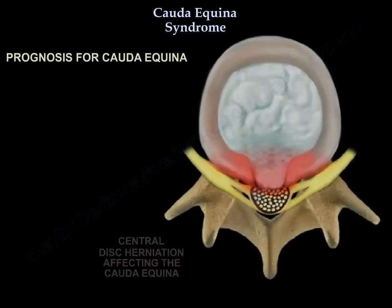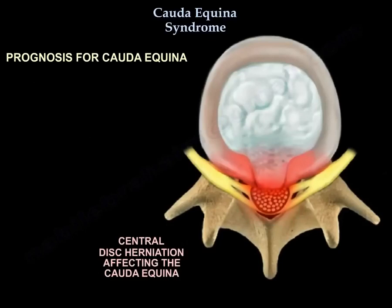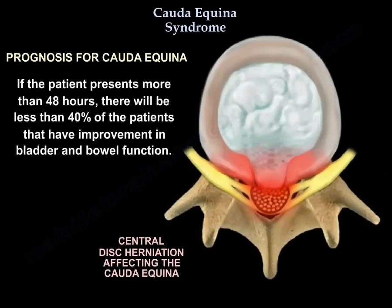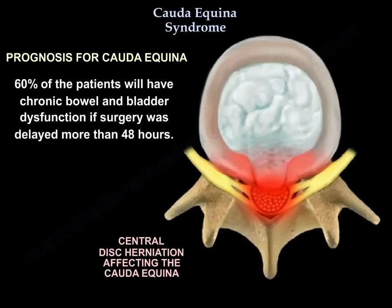The prognosis for Cauda Equina syndrome: there is improvement in pain and weakness, but the result is less predictable for recovery of urinary bladder and bowel function. If the patient presents more than 48 hours after onset, less than 40% of patients will have improvement in bladder and bowel function. Sixty percent of patients will have chronic bowel and bladder dysfunction if surgery was delayed more than 48 hours.